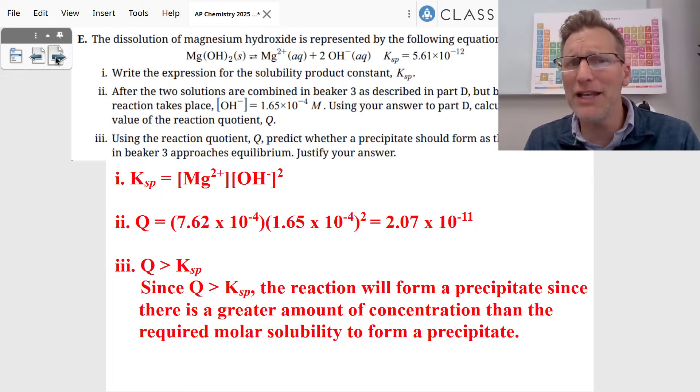In part E, we're looking at magnesium hydroxide dissolving into magnesium ions and hydroxide ions. It gives us a KSP. You can see number one, the KSP, we're trying to write the expression. That's the concentration of magnesium plus two times the concentration of hydroxide squared. It's a one to two ratio. And so we could, given the KSP, find the molar solubility, but they didn't want us to do that.